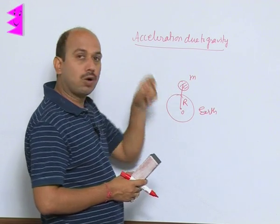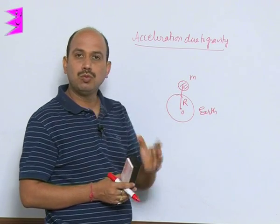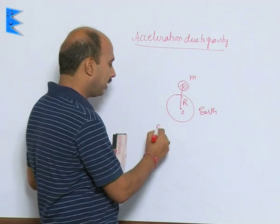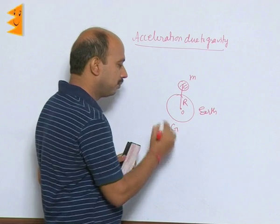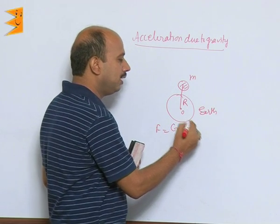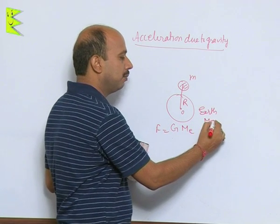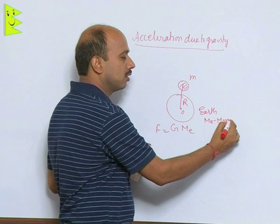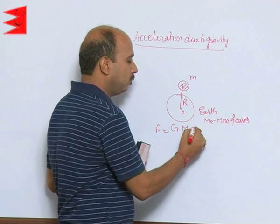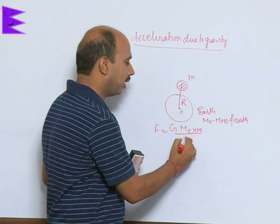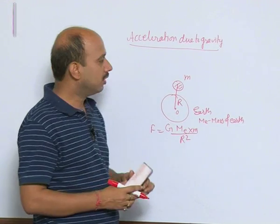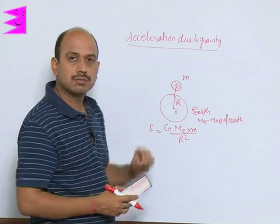When this object is dropped, object will move downward. So force acting on the object will be G Mₑ, we can take mass of Earth, Mₑ is here mass of Earth into m, m is the mass of the object upon R square. This is the gravitational force acting on this mass.